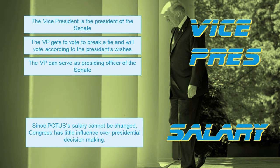Another check the president has over the legislative branch is the vice president. The fact that the vice president is the president of the Senate gives the president some form of check over the Senate. The vice president has powers as presiding officer of the Senate and holds the tie-breaking vote. The vice president will almost always vote according to the president's wishes, giving the president a critical vote in Senate lawmaking.